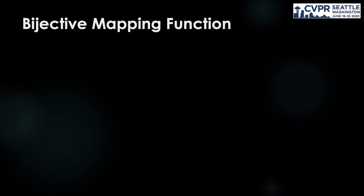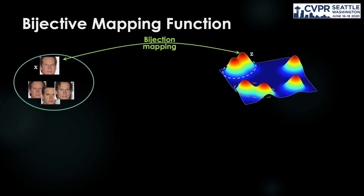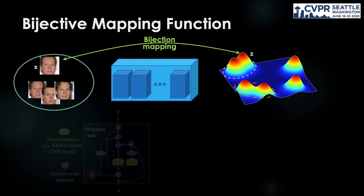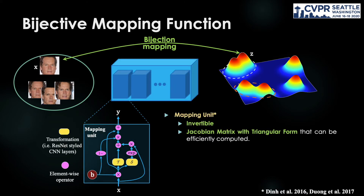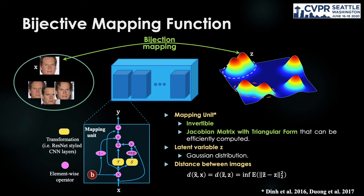In order to obtain the one-to-one mapping property, we firstly define a bijection that maps each image X to a latent variable Z. This bijective function consists of several mapping units with special properties: invertible and a tractable Jacobian matrix. With this specific form, the bijection can be efficiently optimized via a log-likelihood loss function. By setting the density function of latent variable Z as Gaussian, distances between images are equivalent to distances between their latent variables, and efficiently computed as the squared Wasserstein coupling distance between two Gaussian distributions.